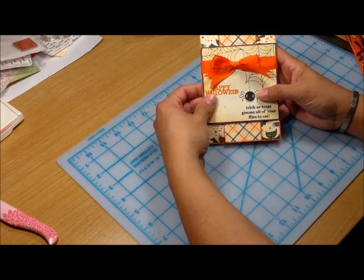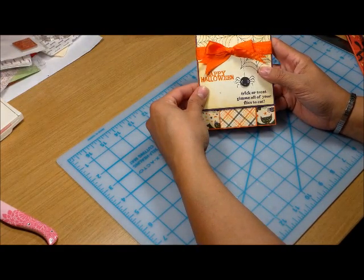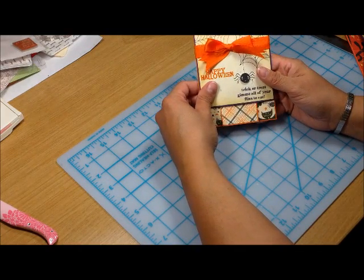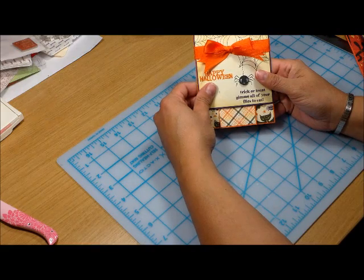This is the finished card that I did for the written tutorial. Just wrapped a little ribbon around here and tied it. Thanks for joining me today. And I hope to see many modified tri-shutter cards in the gallery at Splitcoast Stampers.